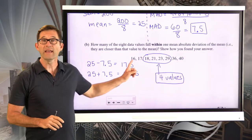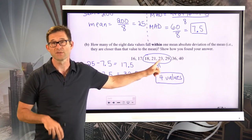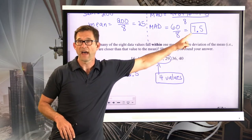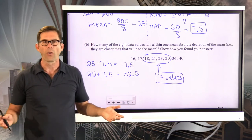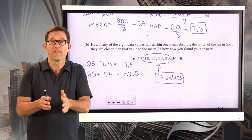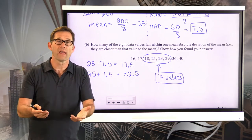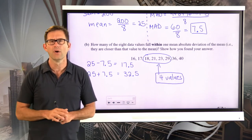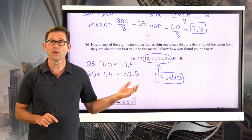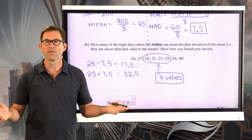Four out of eight values fall closer than the mean absolute deviation from the mean. Roughly half of the data set should fall closer than the MAD, and half should fall farther away — in a well-behaved data set. You could have data sets with extreme outliers or gaps where that wouldn't quite be the case, but here this data set is pretty uniformly distributed, so half the data falls closer than the MAD and half falls farther away.